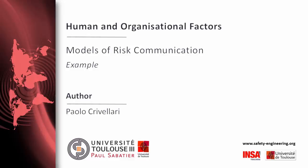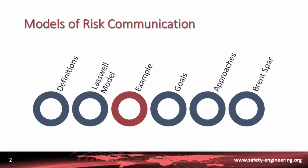In these lectures on human and organizational factors, we are talking about models of risk communication. We will speak more precisely of one peculiar example of a communication model applied to a given risk — specifically, a model of risk communication about the risk related to mobile phones and especially from radiations from base station transmitters for mobile phones.